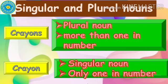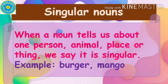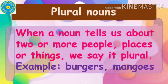The word crayon is a singular noun because there is only one crayon in number. So when a noun tells us about one person, animal, place or thing, we say it is singular. For example, burger, mango. Now can you guess what is a plural noun? When a noun tells us about two or more people, places or things, we say it is plural. For example, burgers, mangoes.